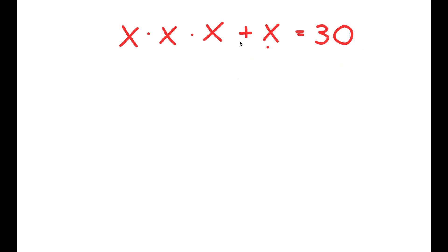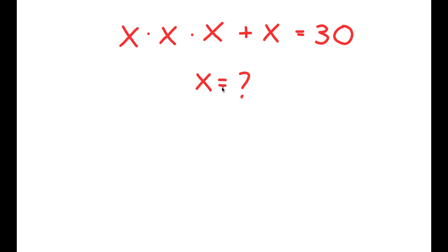So in this equation, we have x times x times x plus x is equal to 30. My only variable here is x, so we know that we're going to solve for x.